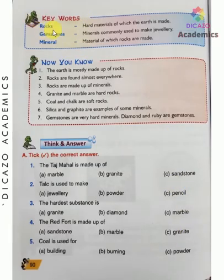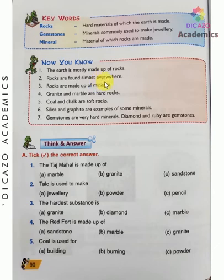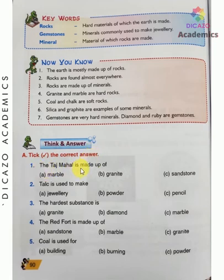Keywords: Rocks — hard material of which the earth is made. Gemstones — minerals commonly used to make jewelry. Minerals — materials of which rocks are made. The earth is mostly made up of rocks; rocks are made up of minerals; granite and marble are hard rocks; coal and chalk are soft rocks; silica and graphite are examples of minerals; gemstones are very hard minerals; diamond and ruby are gemstones. The Taj Mahal is made up of marble.